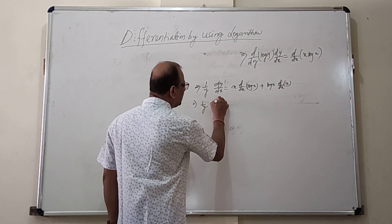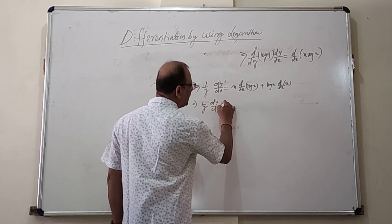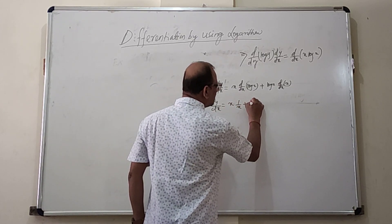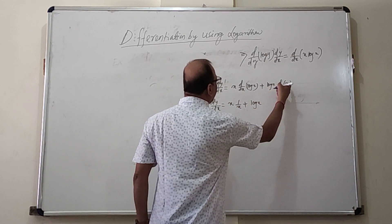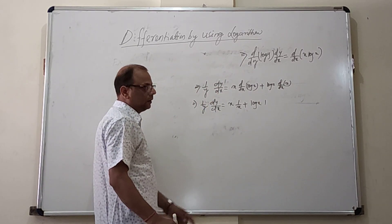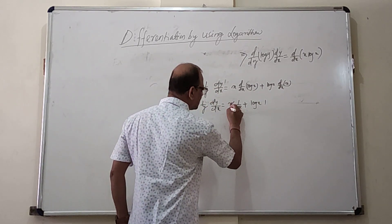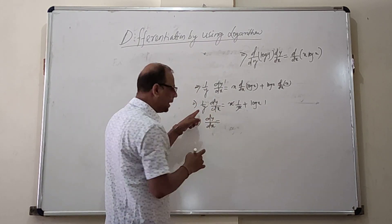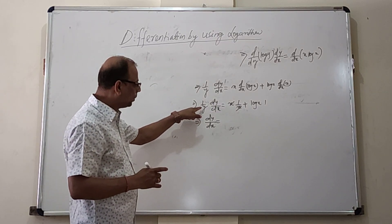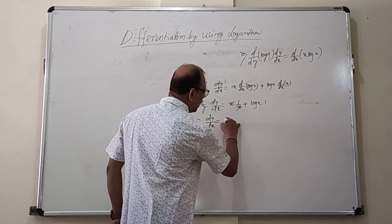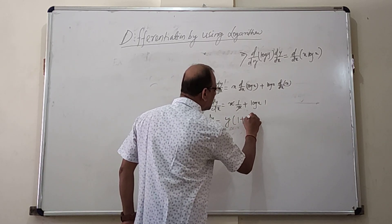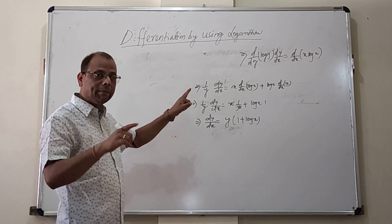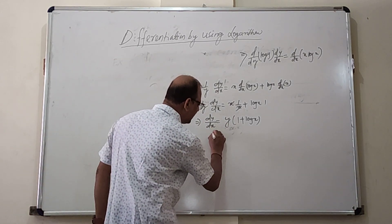So (1/y)·dy/dx equals x·(1/x) plus log x·1, which simplifies to 1 plus log x. Therefore dy/dx equals y times (1 plus log x).